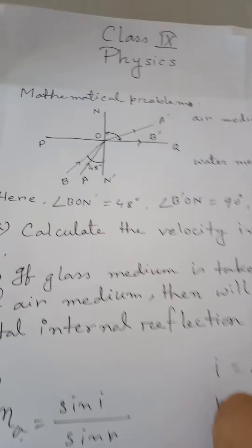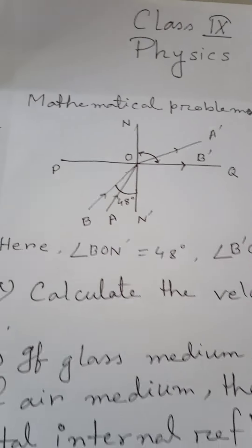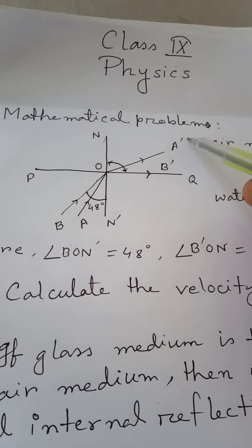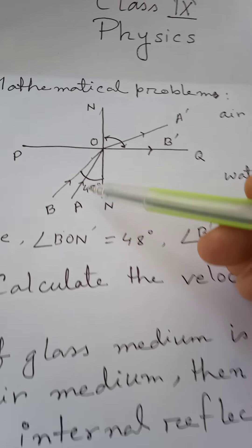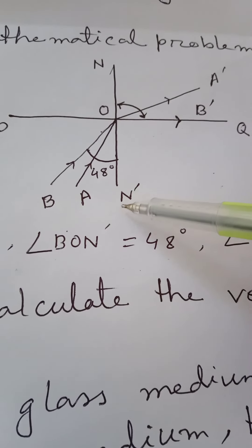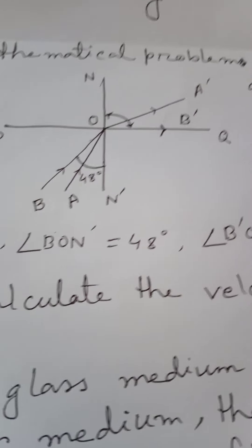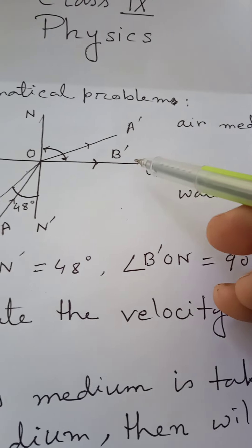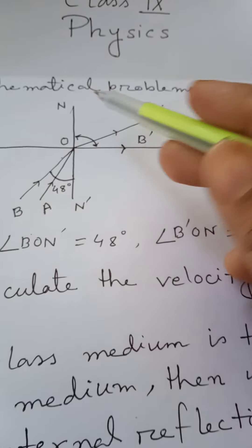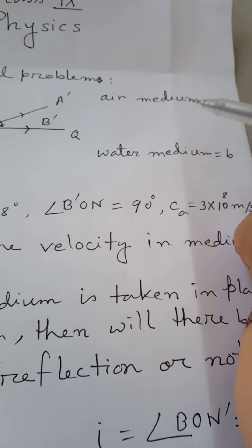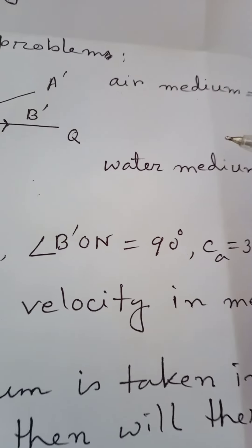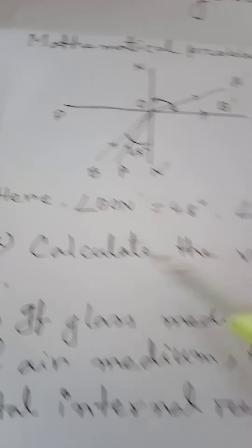Today I will show you a mathematical problem from Chapter 9. Look here — here is a figure. This is medium A and this is medium B, and light is entering from medium B to medium A. The incident angle BON' equals 48 degrees, the refracted angle B'ON equals 90 degrees, and the velocity of light in medium A (i.e., air medium) CA equals 3 × 10⁸ meters per second.